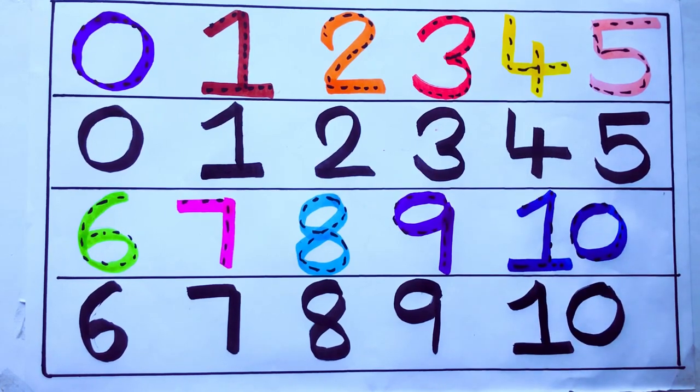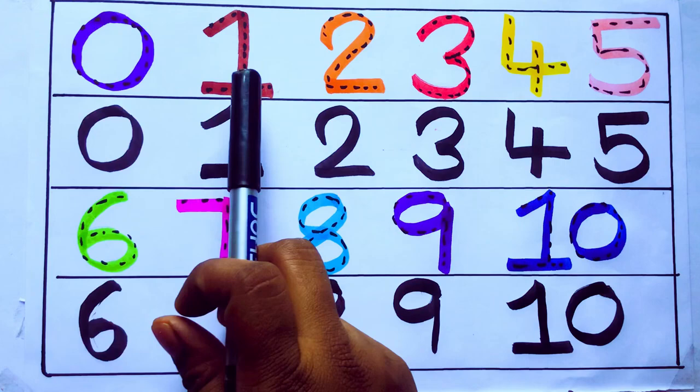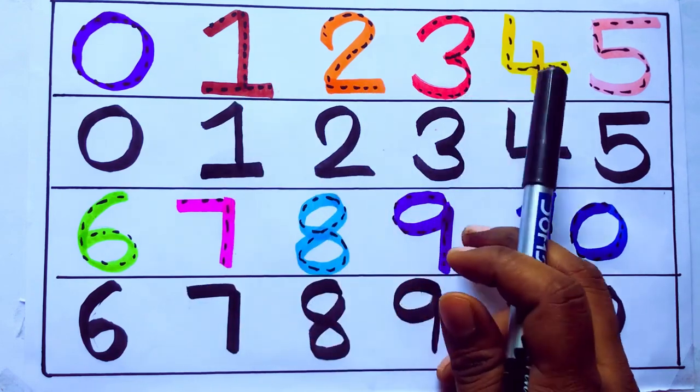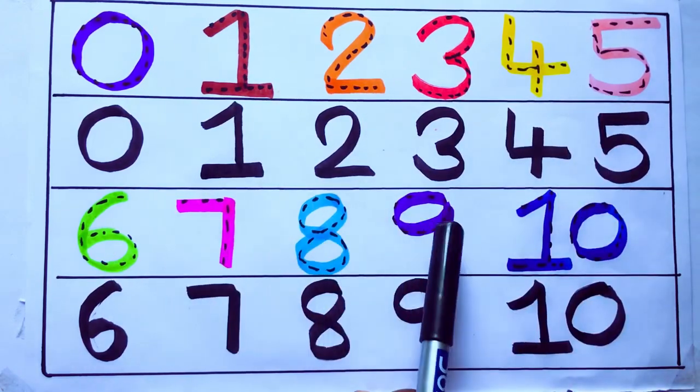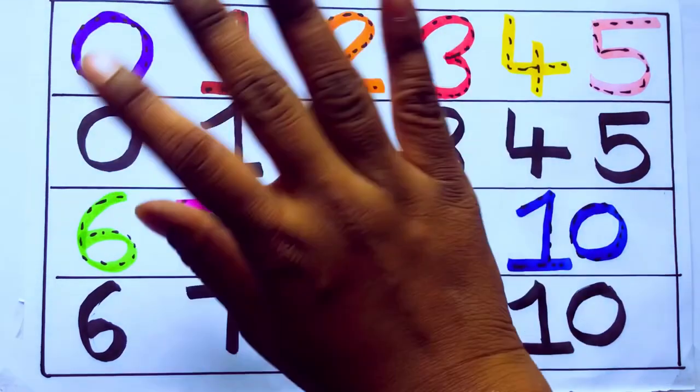One second learning numbers. 0, 1, 2, 3, 4, 5, 6, 7, 8, 9, 10. Okay. Bye kids.